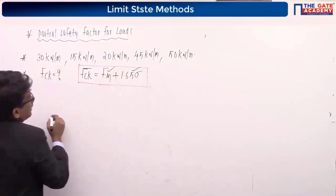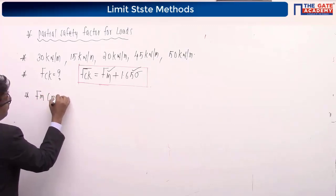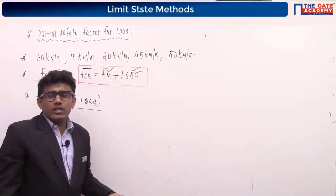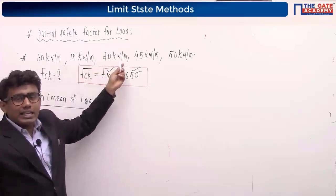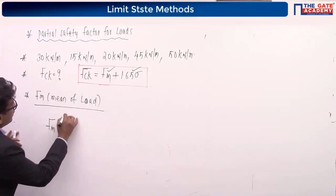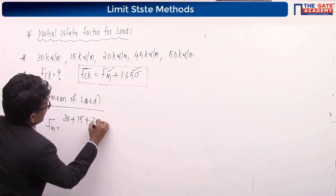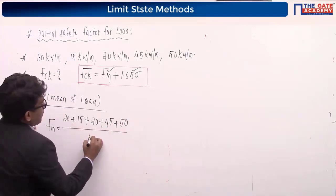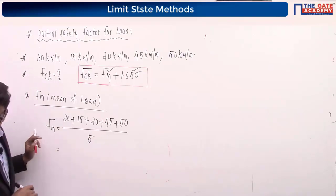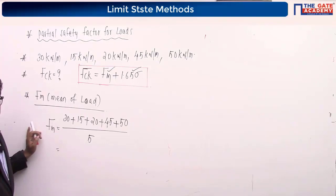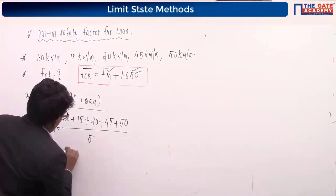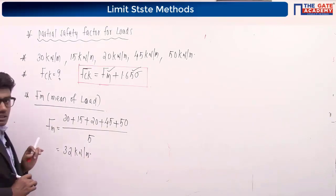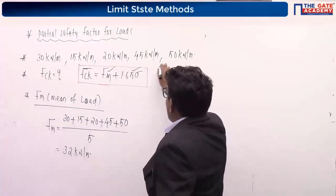Let's find Fm first. Fm is the mean of the loads. To find the mean, take the sum of all five values and divide by the number of samples, which is 5. So Fm = (30 + 15 + 20 + 45 + 50) / 5 = 32 kilonewton per meter.